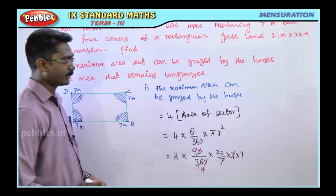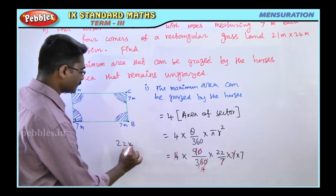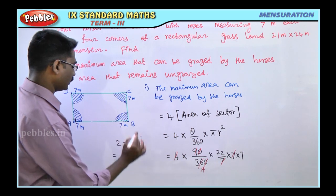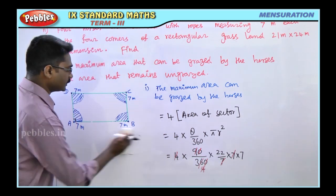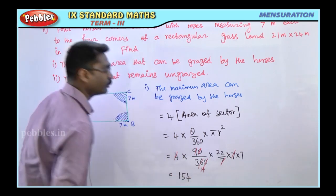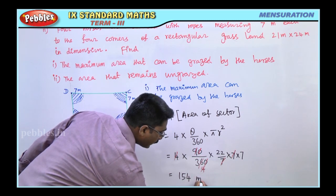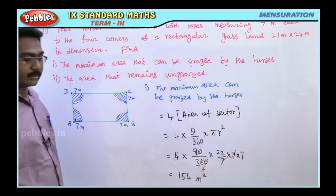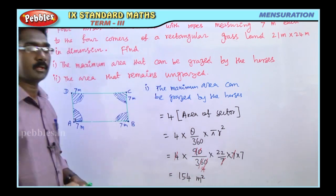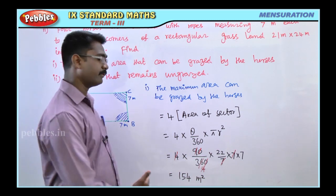Calculating: 4 × (90/360) × (22/7) × 49. This simplifies to 4 × (1/4) × 22 × 7 = 22 × 7 = 154. So the maximum area that can be grazed by the horses is 154 square meters.